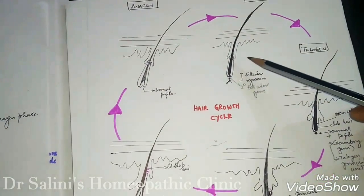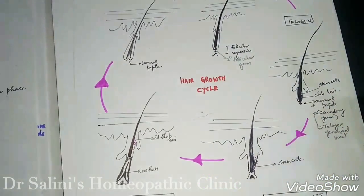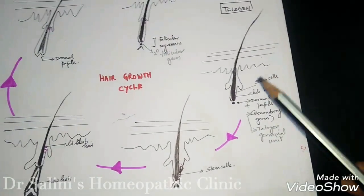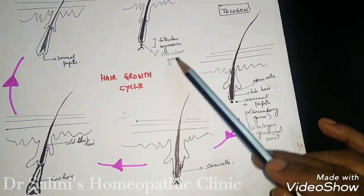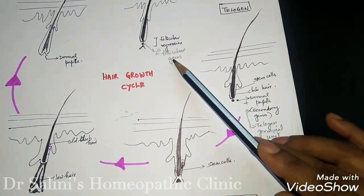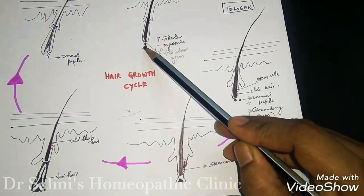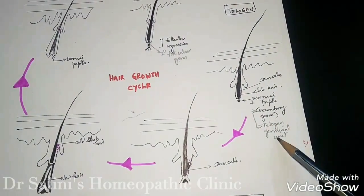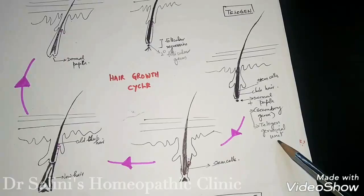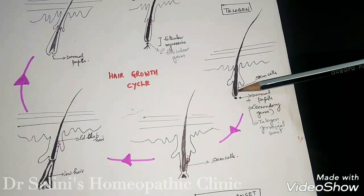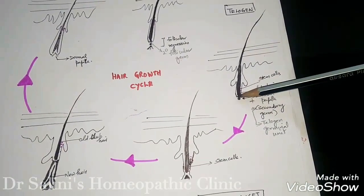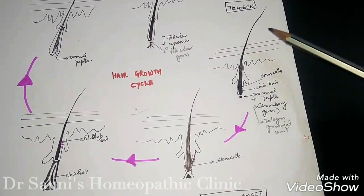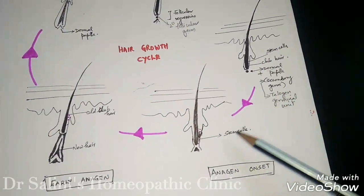This lasts for two to four weeks, followed by the telogen hair phase. Here, the secondary follicular germ and the dermal papillae together form a telogen germinal unit. It is a resting phase — the hair is almost totally detached. This lasts for three to five months.